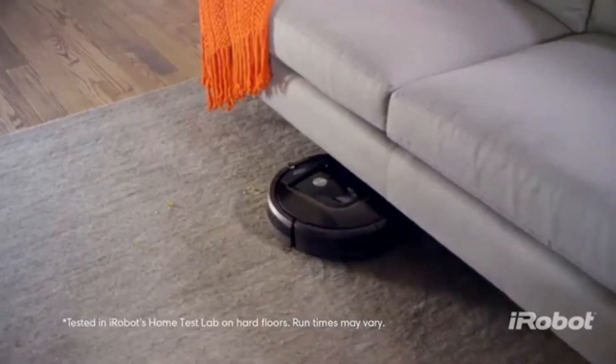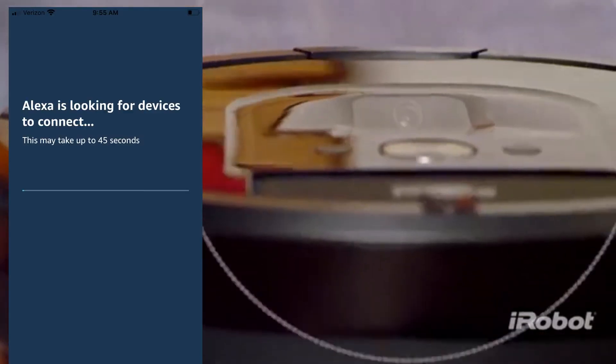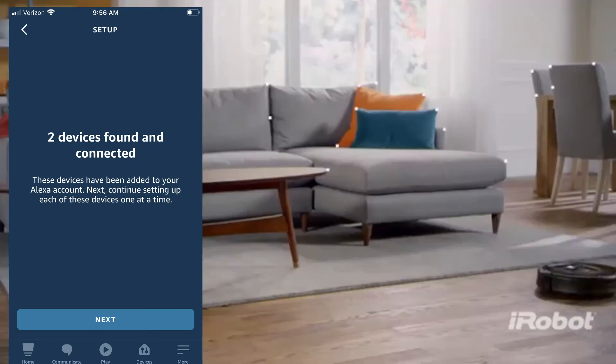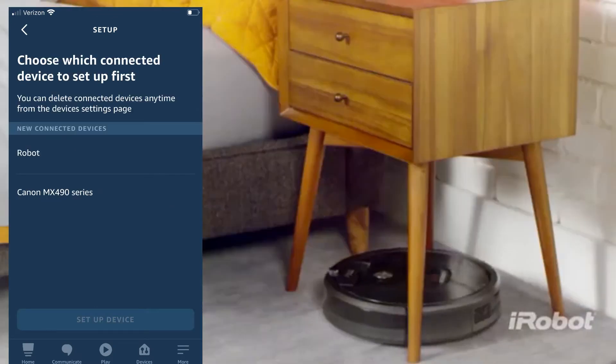Okay, now we are switching from the iRobot app to the Alexa app. And we are going to choose find a new device. Found two. Found my robot. I am going to select that one.